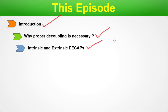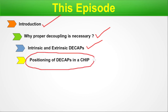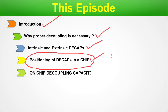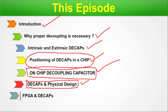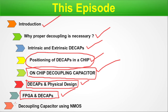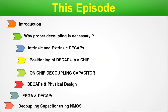We will talk about intrinsic and extrinsic DCAPs. Next, we will talk about the different positionings of DCAPs in a chip — that means the entire chip from the silicon up to its packaging. Next, we will talk about the on-chip decoupling capacitor used in your VLSI design. Next, we will talk about DCAPs in the physical design process — where we use DCAPs in physical design. Next, we will talk about DCAPs used in FPGA designs. Next, we will show you the simple architecture of a DCAP using an NMOS capacitor. That's the menu for today.